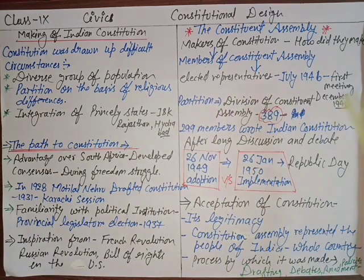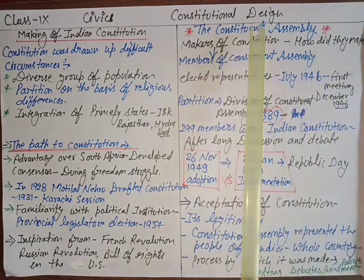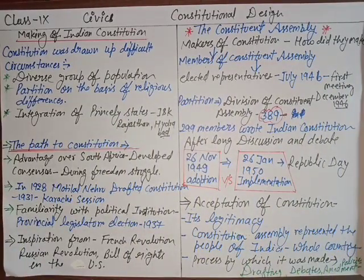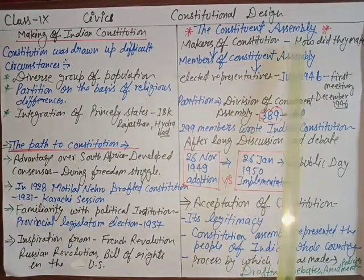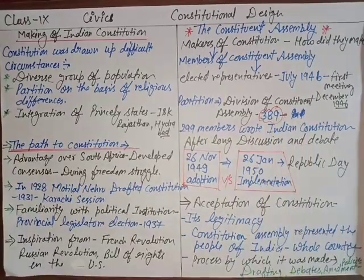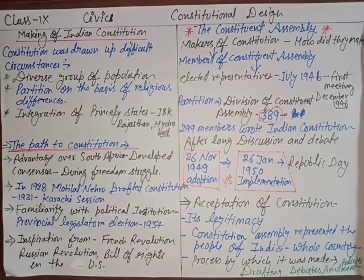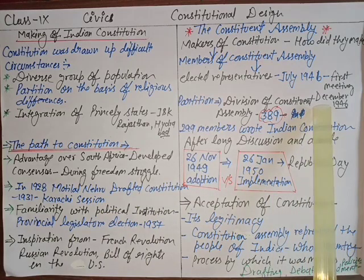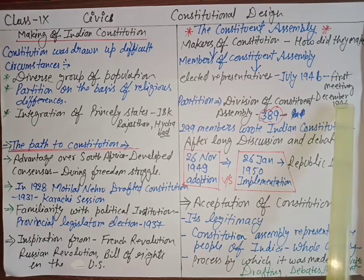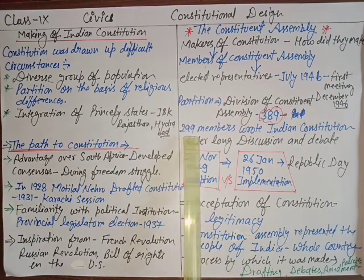Initially the Constituent Assembly had 389 members. Its election was held in July 1946, and its first meeting was also in 1946. But then Jinnah demanded a separate country — Pakistan. Due to the partition, the Constituent Assembly was also divided. The members from the Pakistani areas formed their own assembly. The Indian Constituent Assembly that remained had 299 members. This division happened in December 1946.